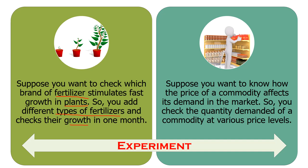Experiment 2: Suppose you want to know how the price of a commodity affects its demand in the market, so you check the quantity demanded of a commodity at different price levels. In this case, the independent variable is the price, which is being manipulated during the experiment, whereas the dependent variable is the demand for the commodity, which is affected by its price.